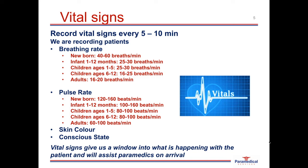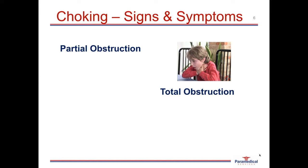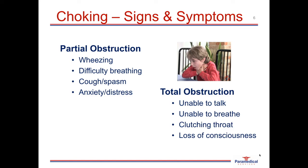The first medical emergency we'll look at is choking. An upper airway obstruction can be either a partial or total obstruction. A partial obstruction shows signs such as wheezing — that whistling sound when air rushes past the obstructed object — difficulty breathing, coughing or spasms in the upper airway, and signs of anxiety or distress. With a total obstruction, the patient will be unable to talk or breathe. They may clutch at their throat, lose consciousness, and start going blue around the lips and mouth — this is called cyanosis, caused by a lack of oxygen in the blood.